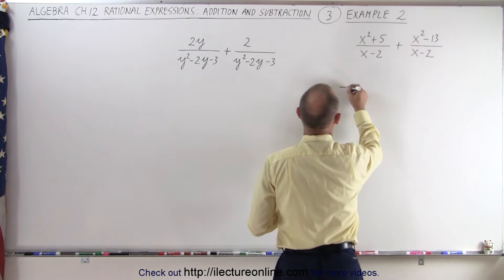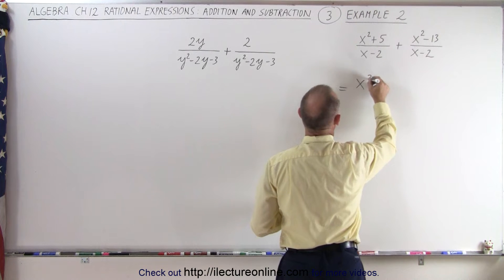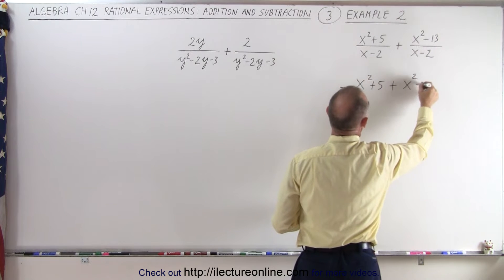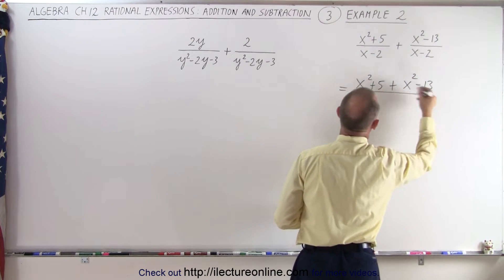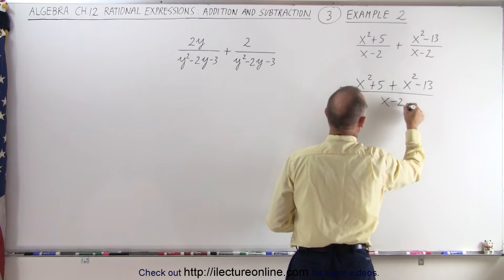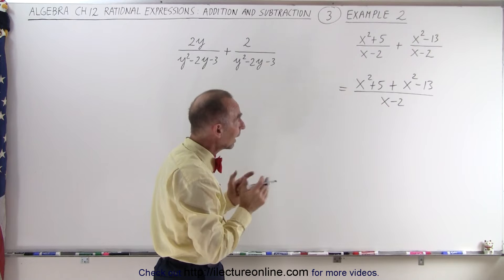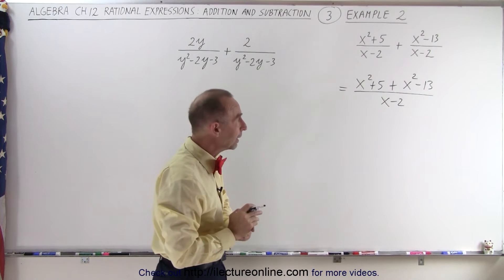So this is going to be as follows. We have x squared plus 5 plus x squared minus 13 all over the same common denominator of x minus 2. So that hasn't changed. We simply add the two numerators together and write them over the same common denominator.